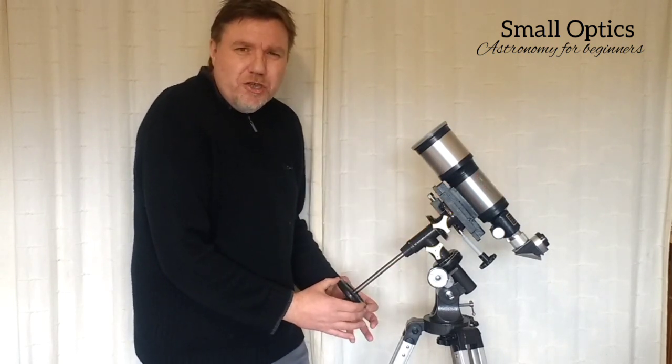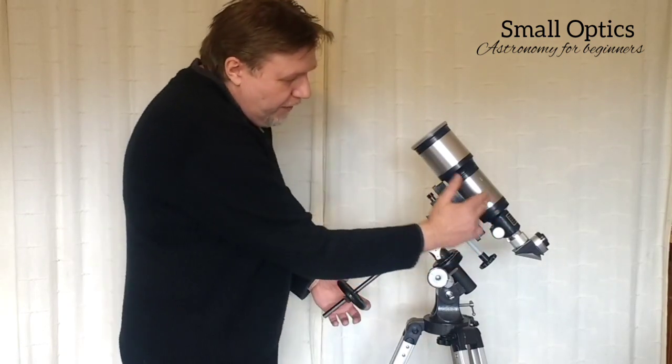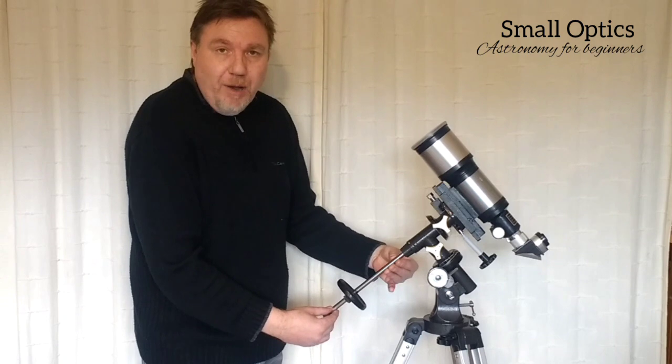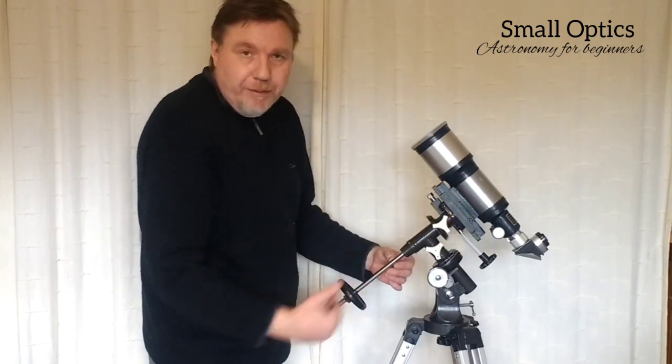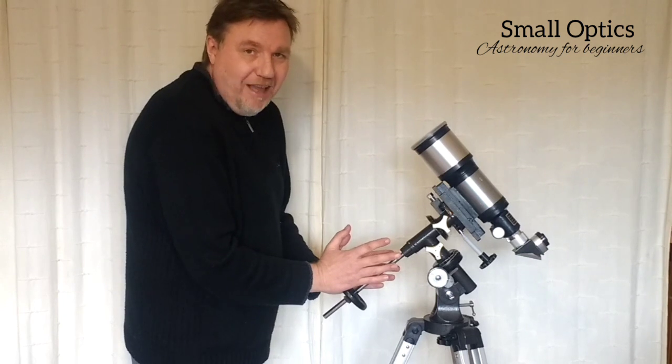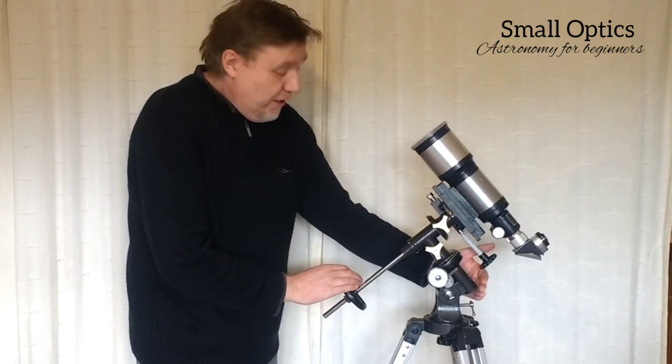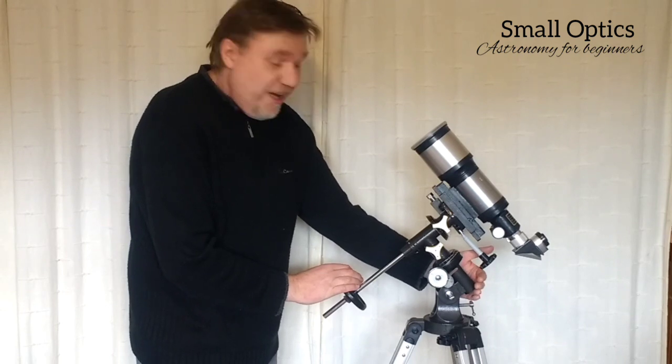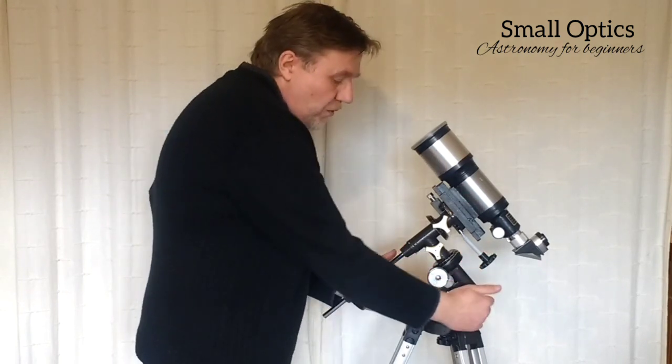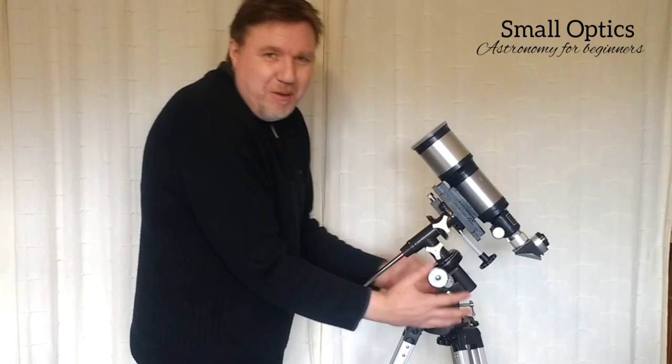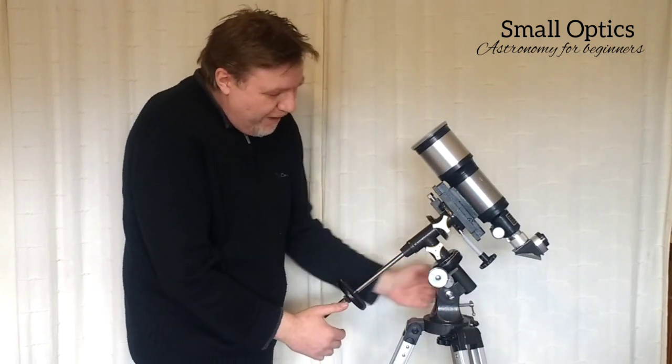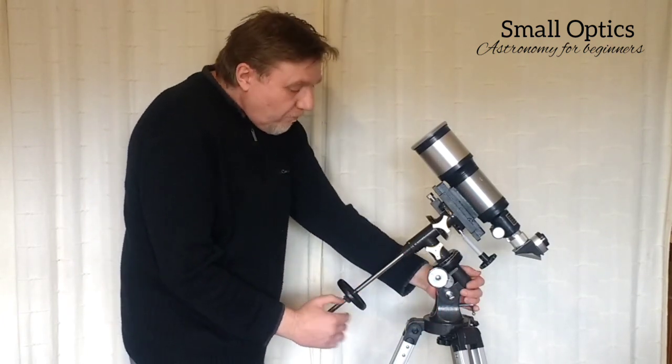You'll know you've got it right because the counterweight is pointing towards the floor—it's the lowest position that the counterweight will be. The telescope and the counterweight bar will form like a T-shape. This is the front of the mount, and this is the back of the mount. It's this face you need to face north.